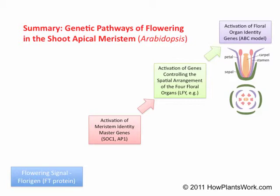From such studies came the idea that a substance produced in the leaves, which sense the photoperiod, is what triggers flowering. The substance was named Florigen in 1936. After nearly 70 years of research trying to identify the chemical nature of Florigen, most plant scientists now agree that Florigen, at least in Arabidopsis, is a protein called FT. When the leaves perceive a photoperiod conducive to flowering, they produce a relatively large amount of FT protein, sufficient to trigger flowering.